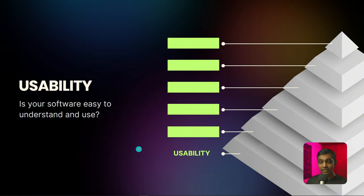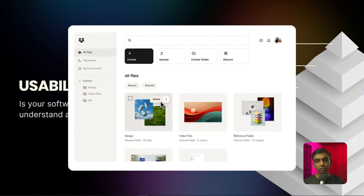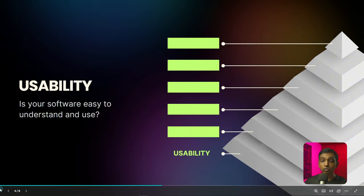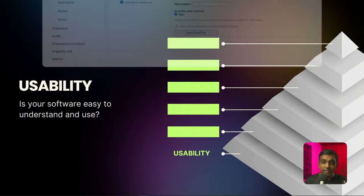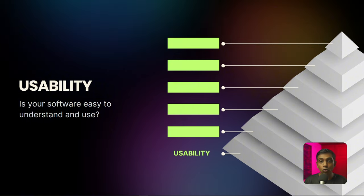Consider the success of Dropbox — its simple drag-and-drop interface revolutionized how people think about cloud storage. In contrast, many early enterprise content management systems failed despite having robust features, simply because their apps were too complex and non-intuitive to use.